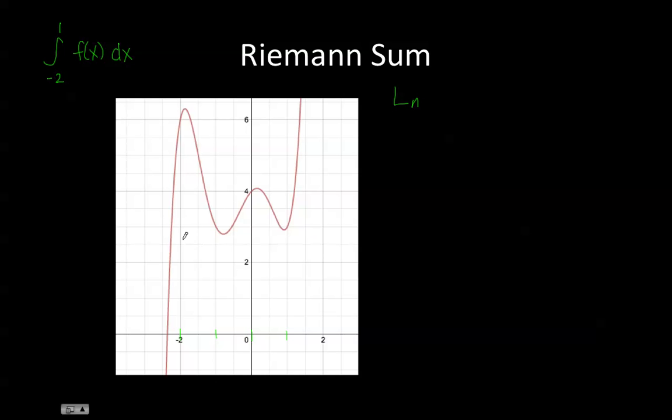Well, from negative 2 to negative 1, the lowest f of x value is here, so that's going to be the height of my rectangle. And for negative 1 to 0, the lowest f of x value is over here.